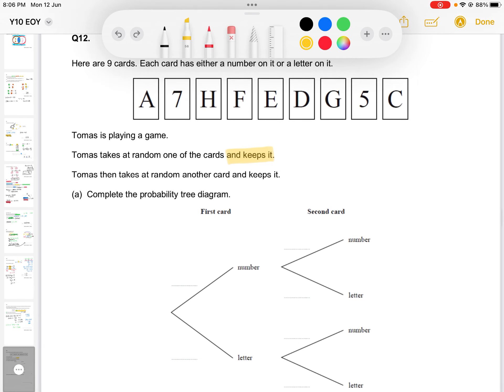So numbers and letters are the way in which they're separating them here. The numbers in these cards, there are two numbers. So we have two out of the nine in total. And for letters we have seven out of nine in total.